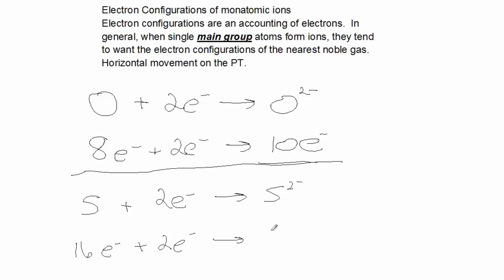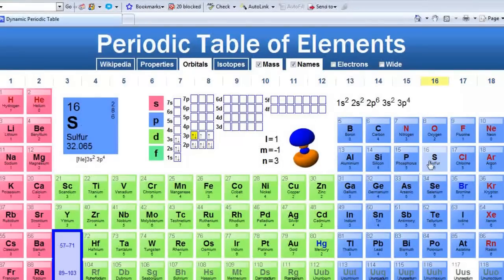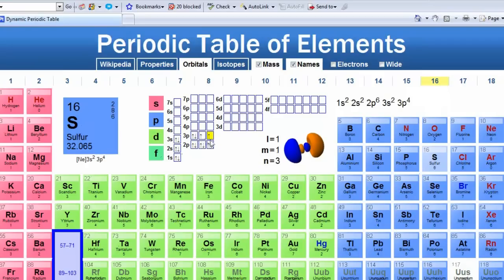To form sulfide ion, which has 18 electrons. And what noble gas has 18 electrons? Argon. Look at this again, the periodic table. There's sulfur, electron configuration, missing two electrons. If it picks up those two electrons, it's just like argon.